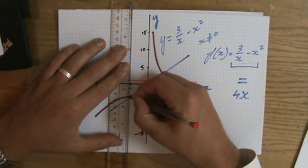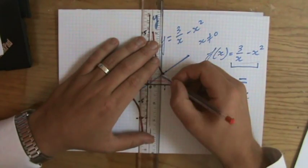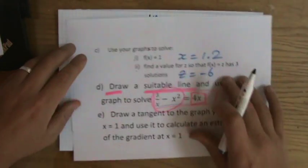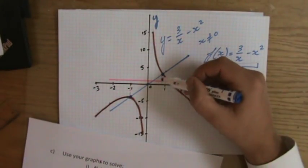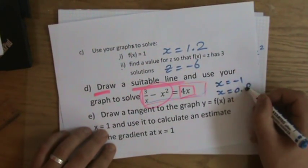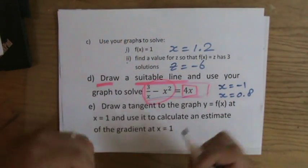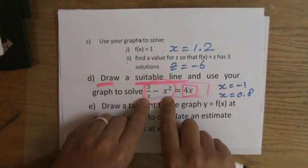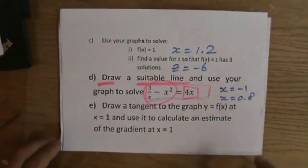I can only use the graph to solve it by finding where the original function equals 4x — where are they equal? I can see intersections at x = -1 and approximately x = 0.8. So by drawing the suitable line y = 4x, I've used my graph to solve that equation.